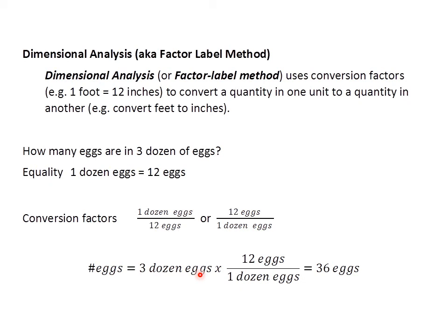So when I set this problem up, I start out with what I'm given: 3 dozen eggs times the conversion factor that allows dozens to cancel, thus leaving me with number of eggs. So I use 12 eggs divided by 1 dozen of eggs. That dozen of eggs cancels. When the units are diagonal to one another, we can cancel them. So 3 times 12 divided by 1 gives me 36 eggs.